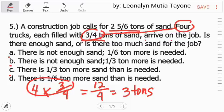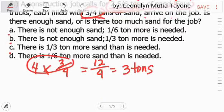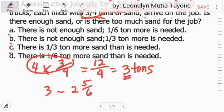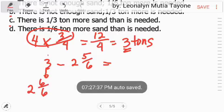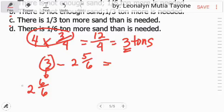Ngayon, a construction job calls for 2 and 5/6 tons. So, i-minus mo lang siya. Ito yung dumating. So, mas marami ang dumating. I-minus mo lang si 2 and 5/6 tons. Paano mag-minus ng mga fraction? Dapat pariho sila ng denominators. So, itong 3, gawin natin 2. Ang isang 1 dyan ay gawin natin 6 over 6. In other words, si whole number na 3 ay pariho lang sa 2 and 6 over 6.